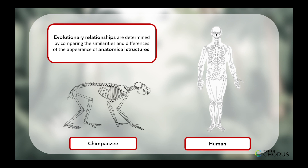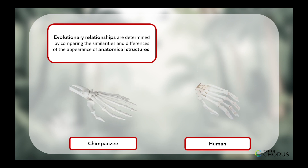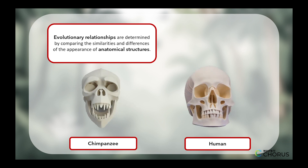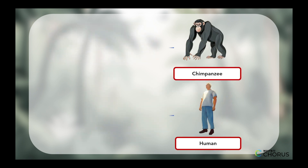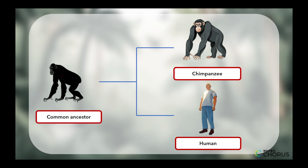For example, humans and chimpanzees have many similarities in their anatomy, such as opposable thumbs, forward-facing eyes, and similar bone structures. These similarities indicate that humans and chimpanzees share a common ancestor and have evolved from that ancestor in different ways over time.